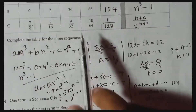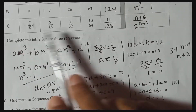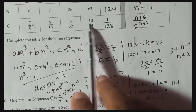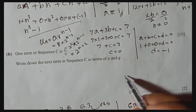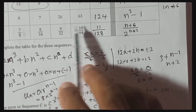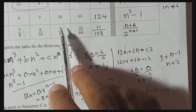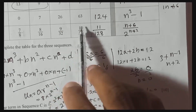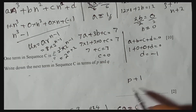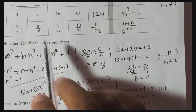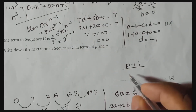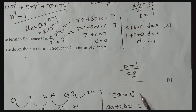They tell us: one term in sequence C is P over Q. Write down the next term in terms of P and Q. The idea is simple — how do you get from one term to the next? For example, 9 goes to 10 by adding 1, and 32 goes to 64 by multiplying by 2. So if the numerator is P, the next numerator is P + 1. If the denominator is Q, the next denominator is 2Q — because the denominator is a geometric progression. So the next term is (P + 1) over 2Q.